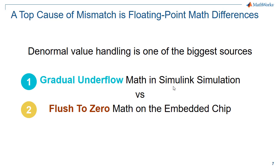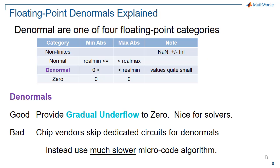The handling of denormal values is one of the biggest sources. There are two prime ways to handle denormals: gradual underflow and flush to zero. Denormal values are one of four floating point categories. Denormals serve very small values close to zero. The good side of them is they provide gradual underflow to zero, which is very nice for solvers. The bad side is that chip vendors typically skip providing dedicated high-speed circuitry — instead, they'll slow down the processor when a denormal is encountered and use much slower microcode algorithms.